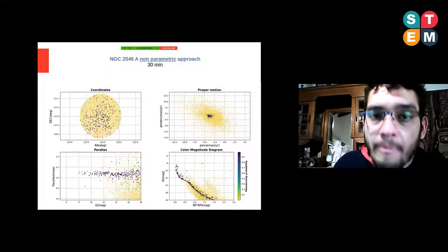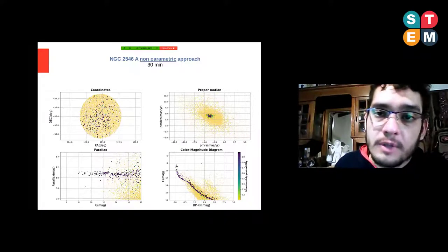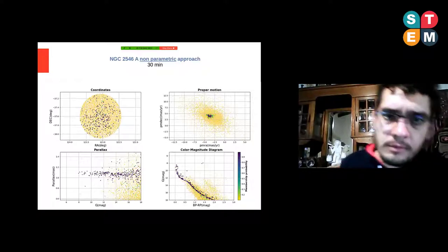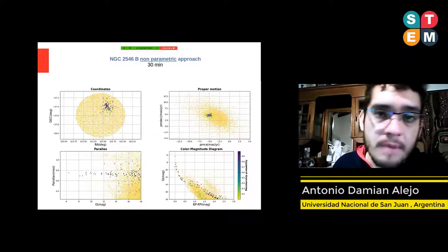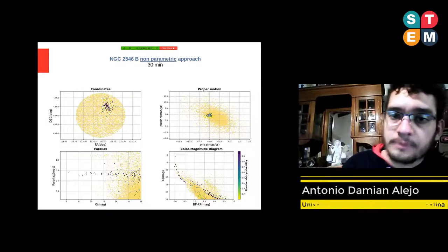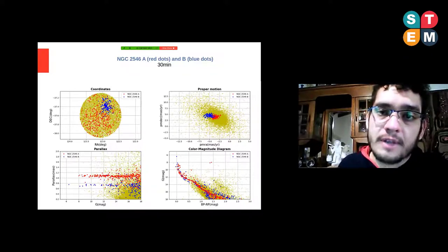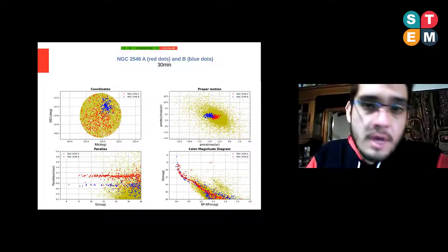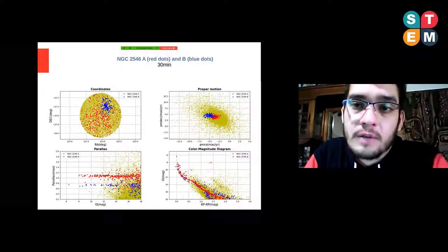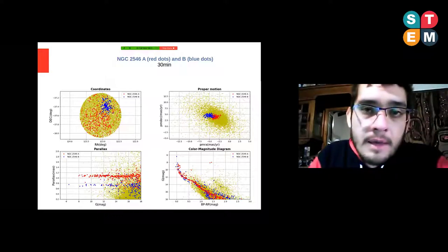Now I will show the results obtained with our code using the non-parametric approach. In these figures you can see the results for cluster A and its membership probabilities indicated by the color scale. Here you can see the results for cluster B and its membership probabilities. In the position space, you can see that the first cluster is larger than the search field, therefore it is necessary to increase the search radius. We can also see that the two clusters are superimposed both in the color-magnitude diagram and on the sky.